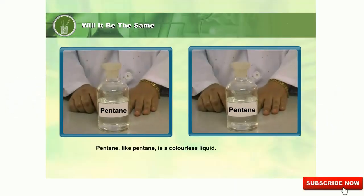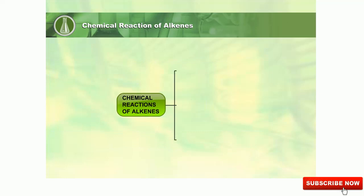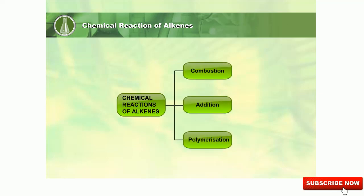Pentane, like pentene, is a colourless liquid. Will pentene show the same chemical properties as pentane? What do alkenes have in common? They all have double bonds. The double bonds make them more chemically reactive. Let's learn about the chemical properties of alkenes.